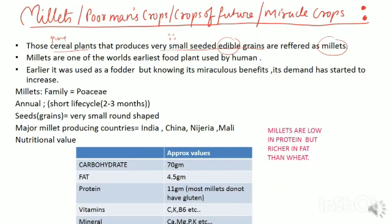Millets are believed to be among the first plants domesticated by humans. The millets belong to the family Poaceae. The plants are annual in nature - once the plant completes its life cycle it dies. The life cycle of the plants is very short, about two to three months.